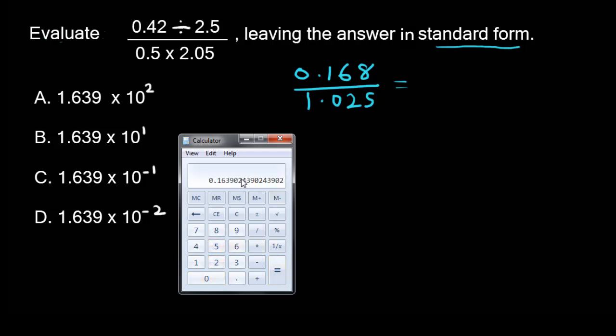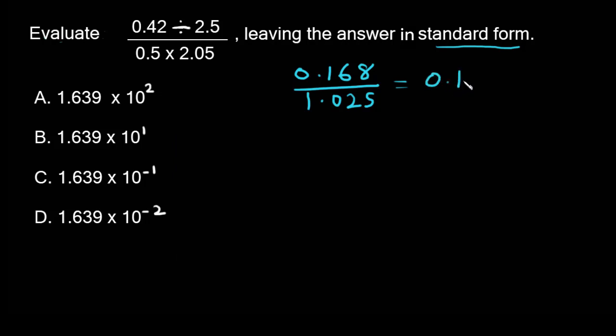This is what we have. We are going to focus on the four digits after the decimal point. What do we have? 0.1639. This is our answer, but we must leave it in standard form.